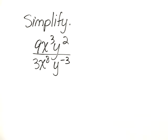Simplify. 9x cubed times y squared, all divided by 3x to the 8th times y to the negative 3.